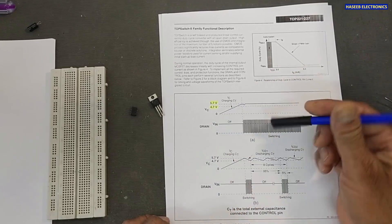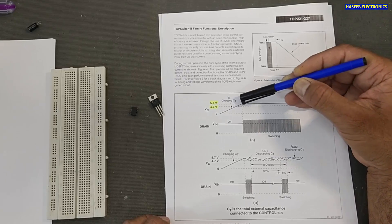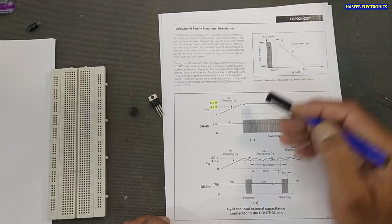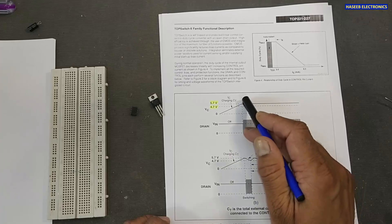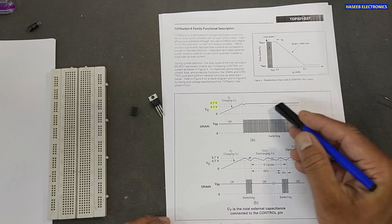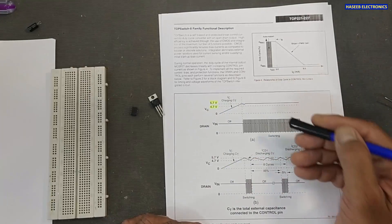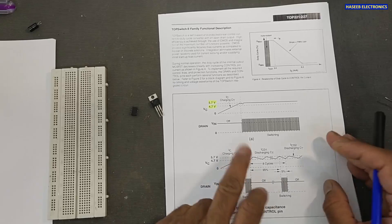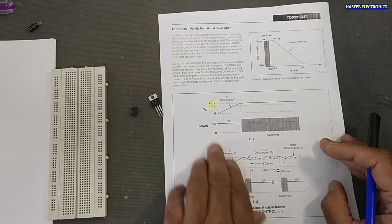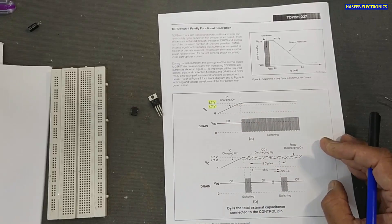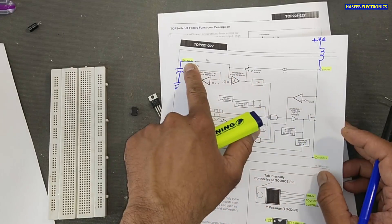Once it needs to reach 5.7 volts to start up, after that it will complete its switching cycle. If at any time the voltage exceeds 5.7 volts, it will turn off its switching. If the voltage drops below 4.7 volts, it will stop switching and start to charge the VCC capacitor again from its internal regulator circuit.